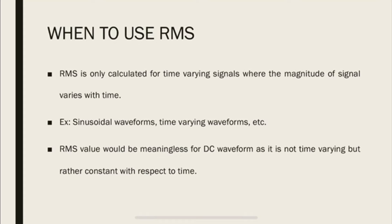So when do we need to use RMS? So as we discussed in the previous slide, RMS is calculated for time-varying signals where the magnitude of signal varies with time. For example, sinusoidal waveforms or any other time-varying waveform. Now, RMS would be meaningless for DC waveform because DC waveform does not vary with time. It's rather constant with respect to time.